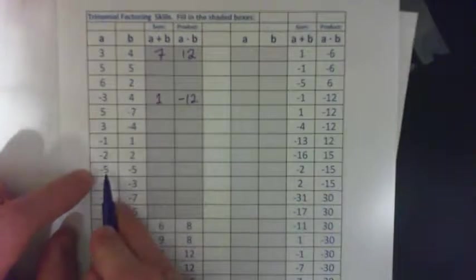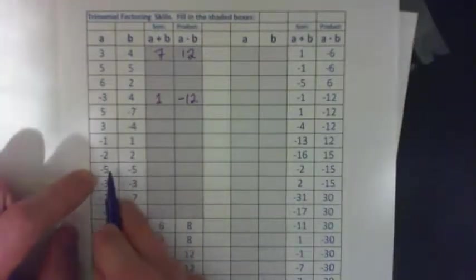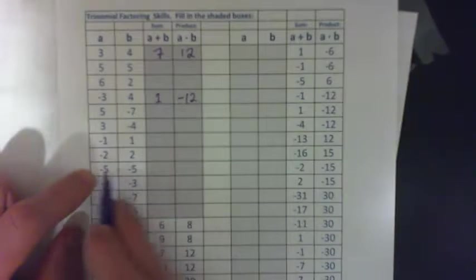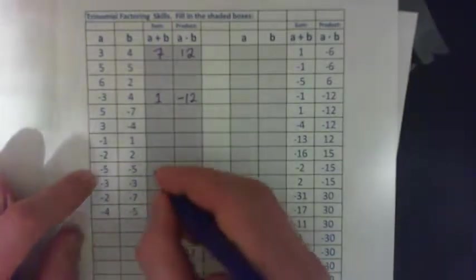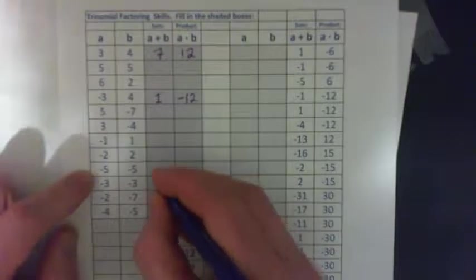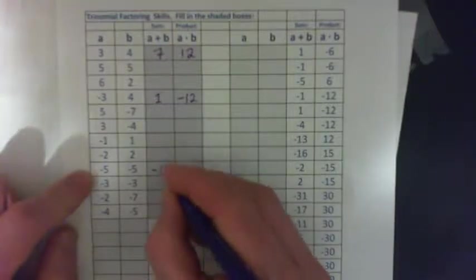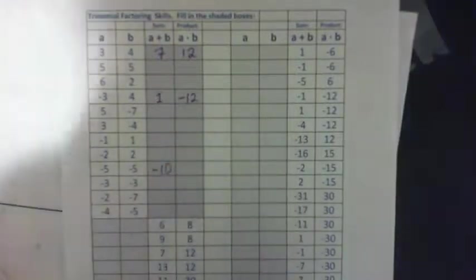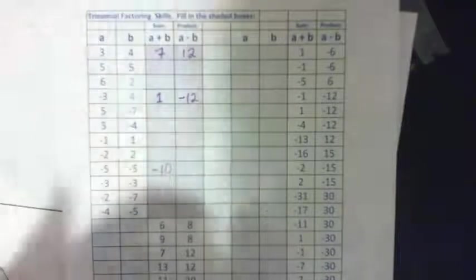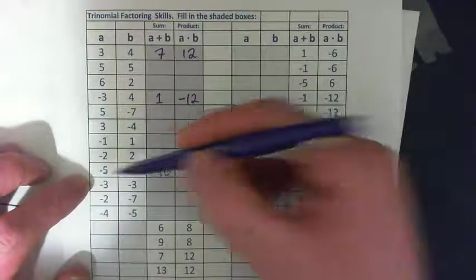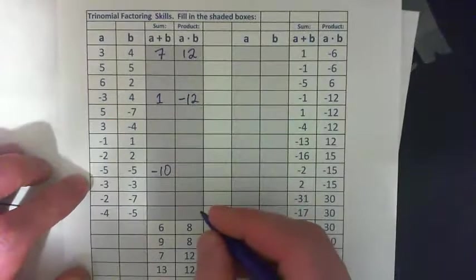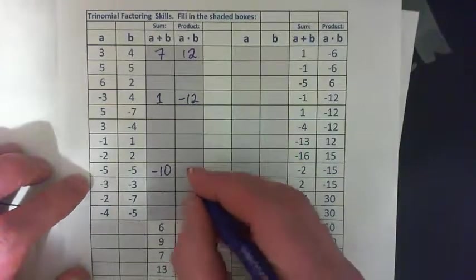A is negative 5 and B is negative 5. A plus B — we need to add them. Negative 5 plus negative 5 is going to be negative 10. 5 bad guys plus 5 more bad guys is 10 bad guys, negative 10. A times B — we need to multiply them.